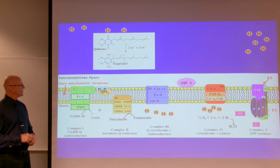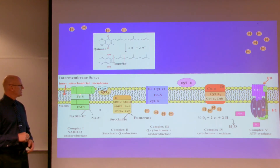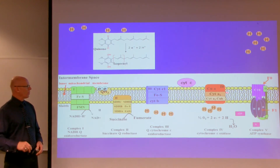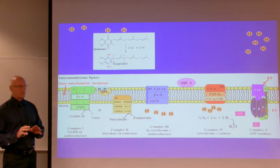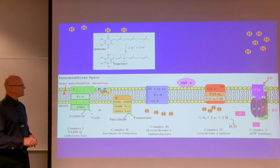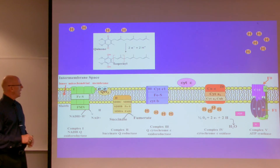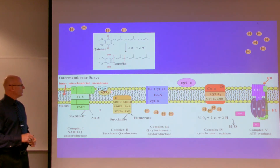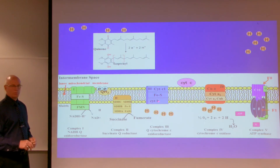QH2 is mobile, whereas complexes 1, 2, 3, and 4 are stationary. Ubiquinone and cytochrome C are both mobile. Ubiquinone transports electrons within the lipid bilayer to cytochrome B.